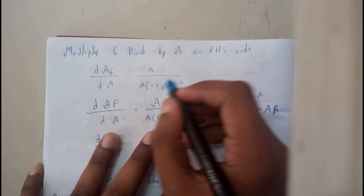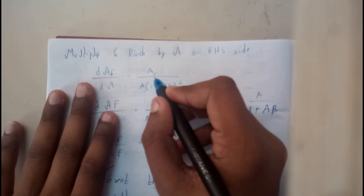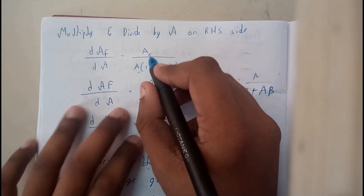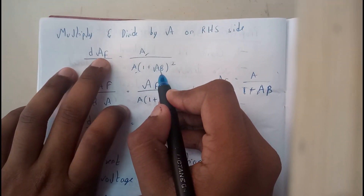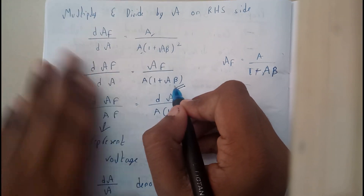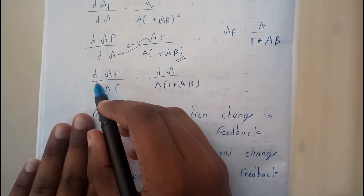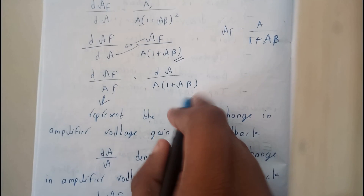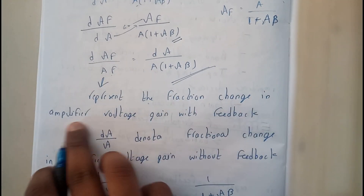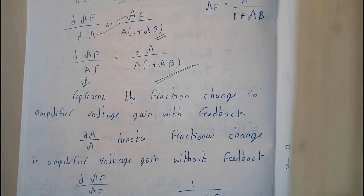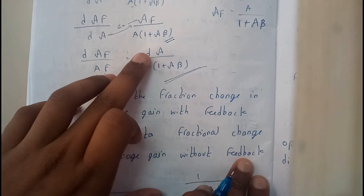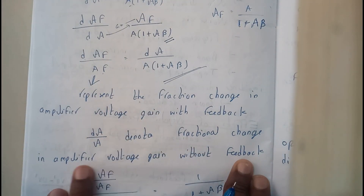Now I will multiply the numerator and denominator by A, so that d(af)/dA equals A divided by [A times (1 plus A·beta) squared]. Observing this, A divided by (1 plus A·beta) is nothing but af. So we can write: d(af)/dA equals af divided by [A times (1 plus A·beta)]. Rearranging, d(af)/af equals d(A)/A times 1/(1 plus A·beta). Here d(af)/af represents the fractional change in amplifier voltage gain with feedback.